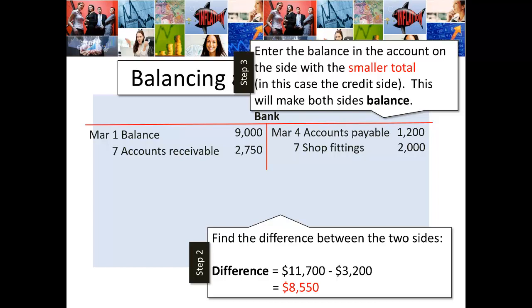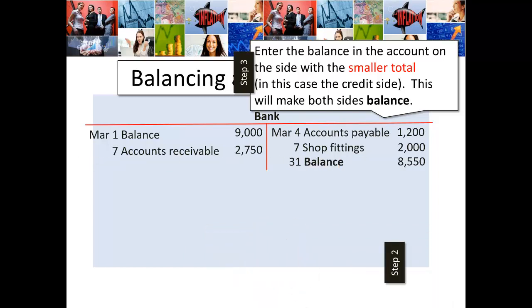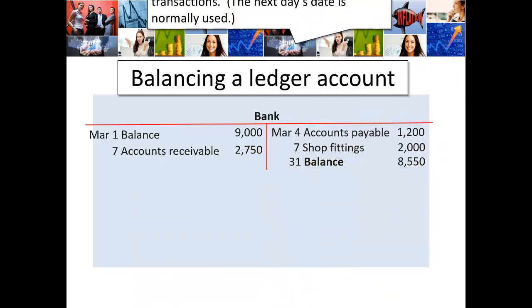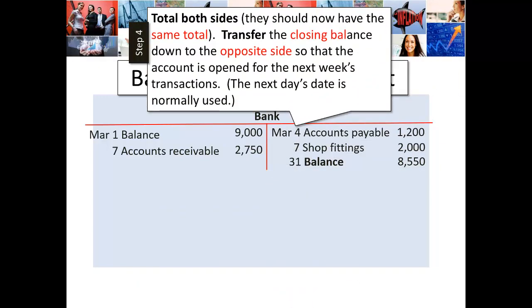Both sides will now total the same amount. The date used is usually the last of the month — this is when the balancing is typically carried out. But just for simplicity, since we only have a few transactions here, we're going to use the end of the week. You need to write these steps down, practice them, and remember them.